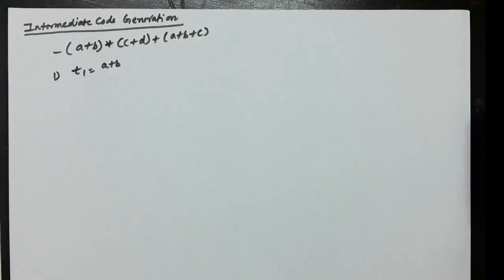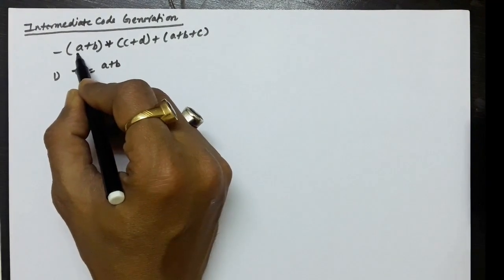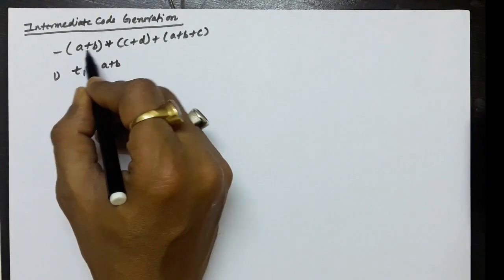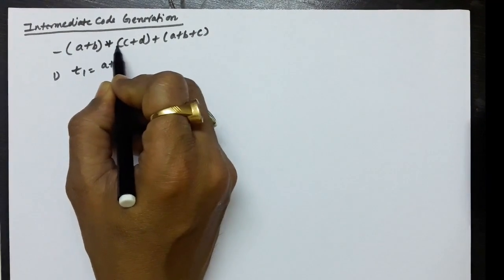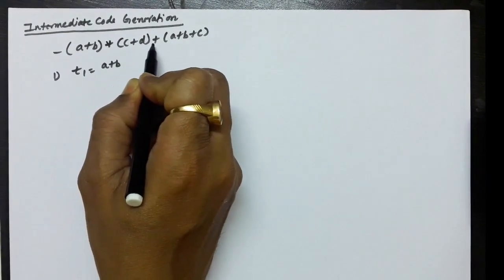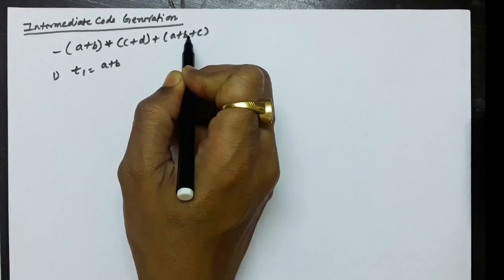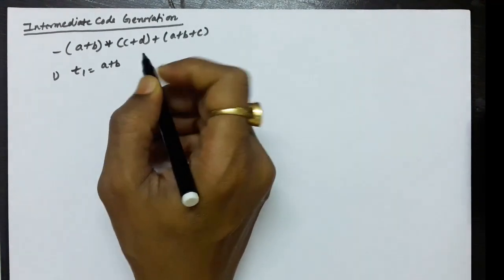Hello everyone. Continuing with our discussion on intermediate code generation, we are going to see some examples of intermediate codes using three-address codes. For example, the expression given is: minus a plus b, multiplied with c plus d, plus a plus b plus c. We have to convert this expression into three-address code.